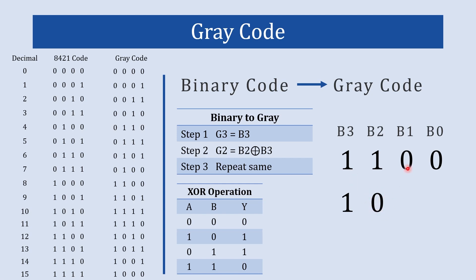In the next step, b1 XOR b2 — both inputs are different, so the output is 1. In the next step, b0 XOR b1 — both inputs are the same, so the output is 0. This is our final converted gray code. 1100 is decimal 12, and the gray code equivalent to 12 is 1010.